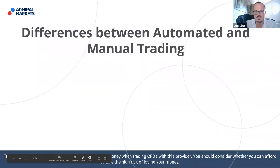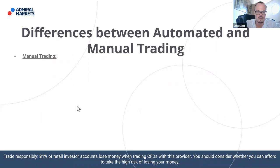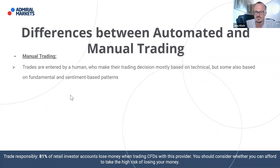Let's look at the differences between automated and manual trading. Starting with manual trading — many of us are probably familiar with this. Manual trading means trades are entered by a human by clicking a mouse, in a discretionary way. We make our trading decisions and take our trades mostly based on technical analysis, for example price action analysis.